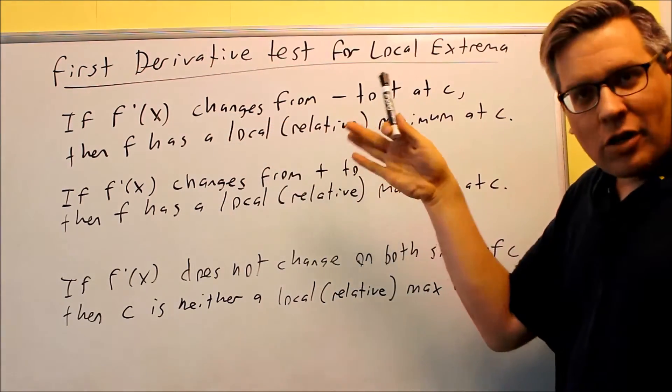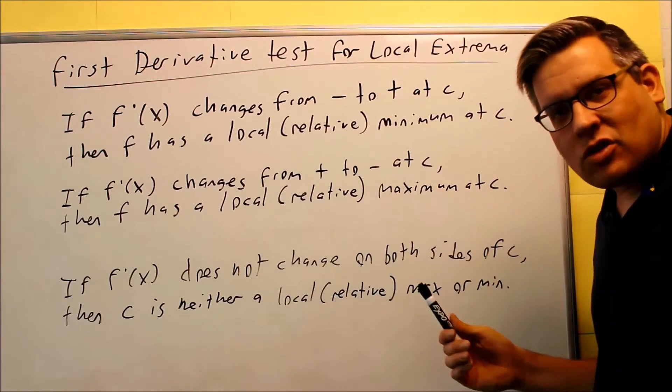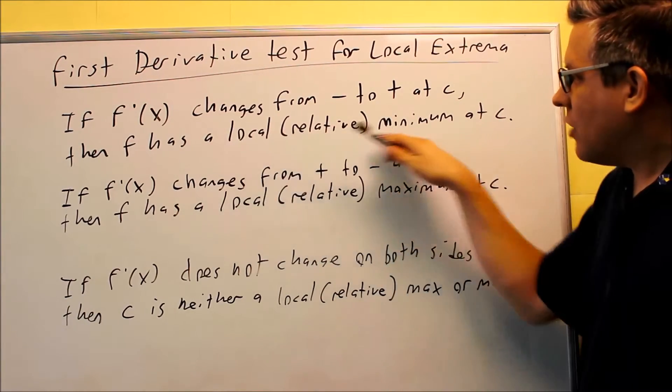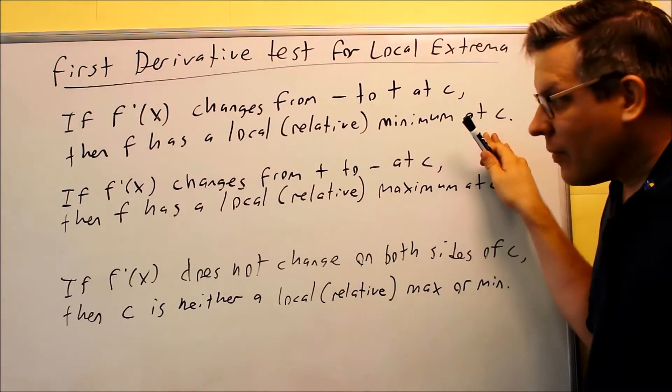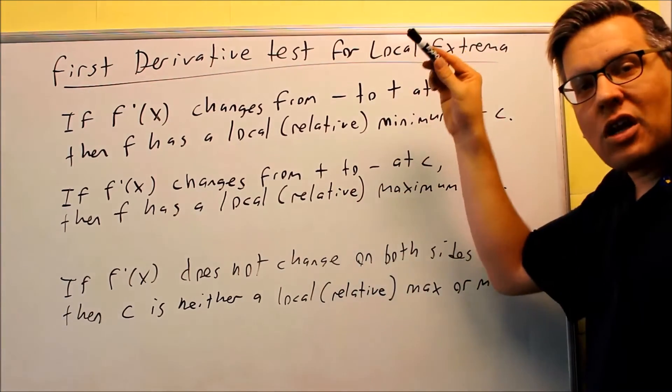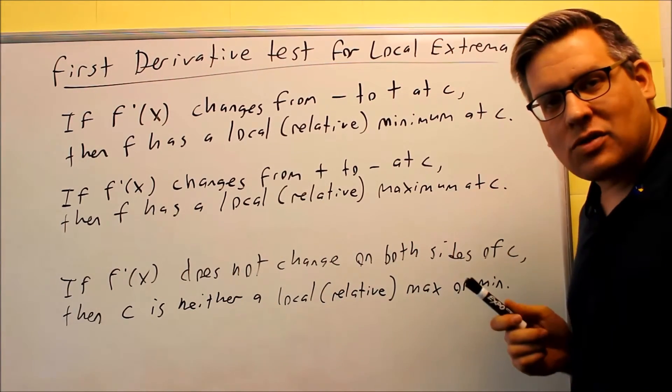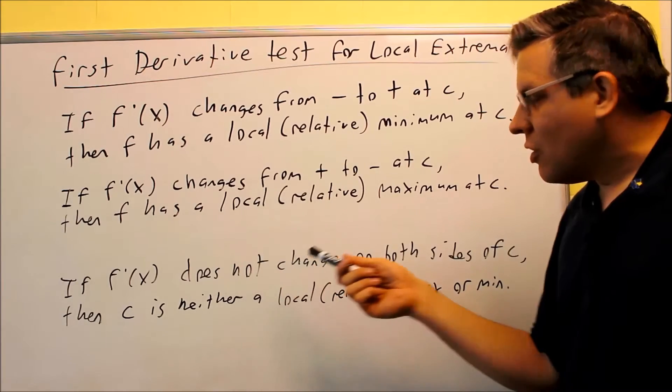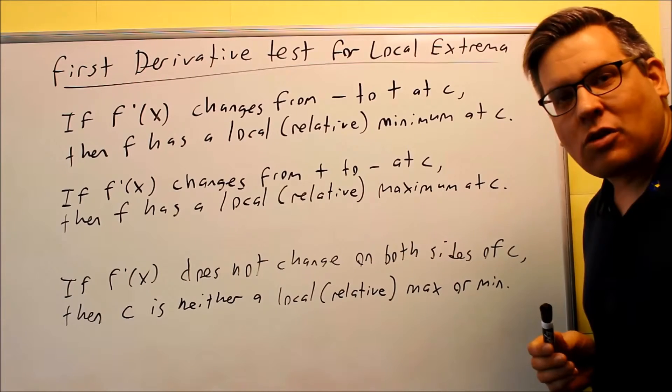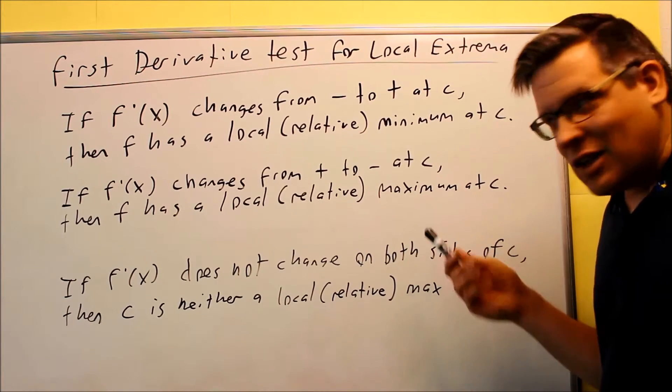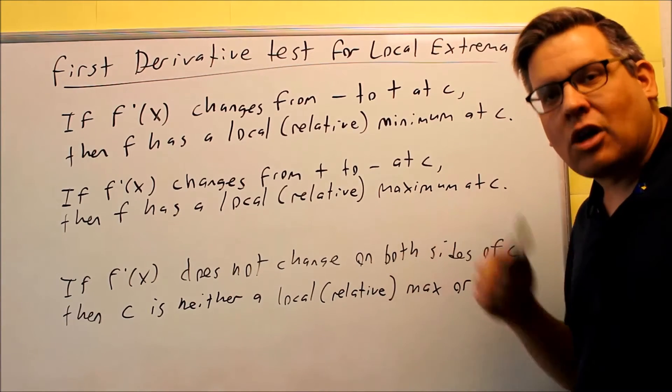This is called the first derivative test for local or relative extrema. So, if we see on the chart, if you see a change from negative to positive, that means you have a decrease and it's going downhill and uphill. That's indicative that you have a relative or local min at your C. If you have a plus and minus, that means it's increasing and then decreasing. Plus to minus will tell you there's a local maximum at C. And then if you don't see a change at all, if it's plus plus or minus minus, we didn't see that with our particular example here. But if you had that, that would tell you that your C, it's not anything. It's not a relative max and it's not a relative min.